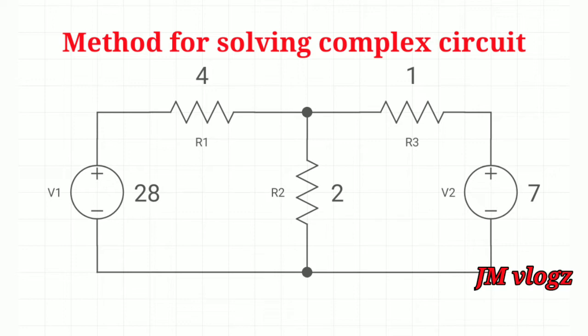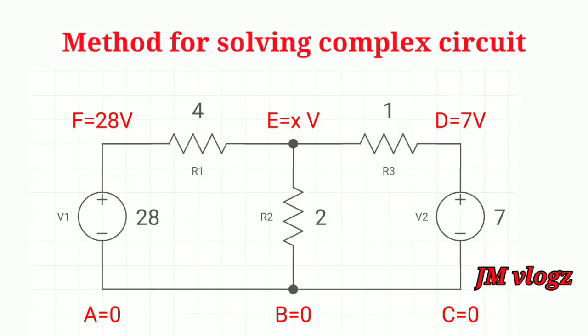We are going to apply our method to this circuit. The circuit contains two power supplies of 28V and 7V, three resistors: resistance R1 which is 4 ohm, R2 of 2 ohm, and R3 of 1 ohm. I am just giving names for the circuit as A, B, C, D, E, F. There are two junctions, one at B and the other at E.